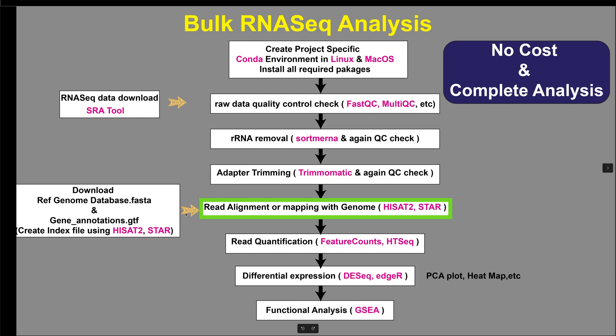HISAT2 and STAR are tools for fast and sensitive alignment, mapping RNAseq reads to a reference genome, facilitating the study of gene expression and transcriptome analysis.